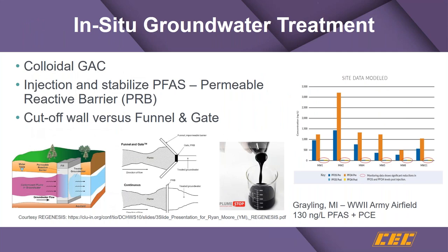It's also possible to produce an in-situ groundwater treatment for PFAS without removal of the groundwater. This occurs through injection of material that adsorbs PFAS constituents in the ground. There is a colloidal granular activated carbon that can be injected into a groundwater treatment system with significant ability to remove PFAS. Data from several groundwater sites in Michigan show significantly removed PFAS constituents in an in-situ environment.